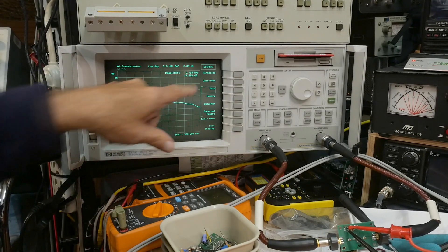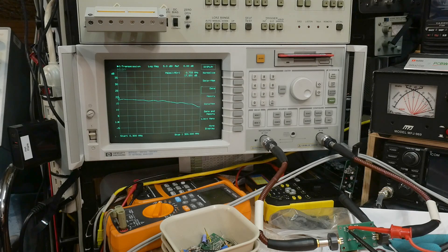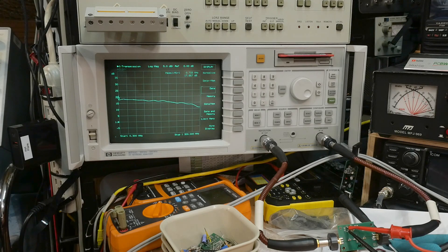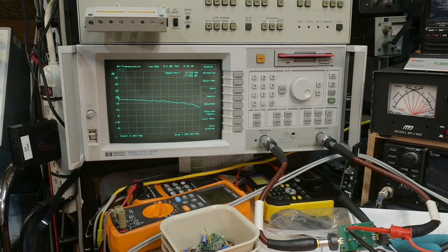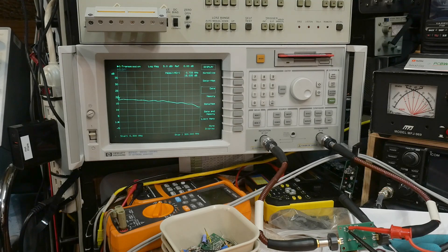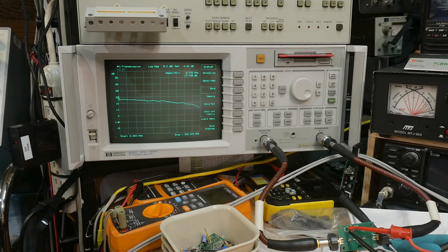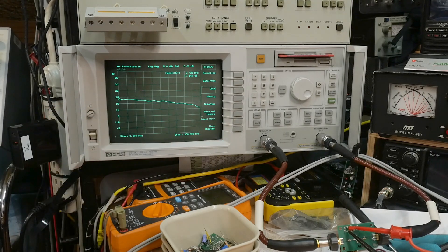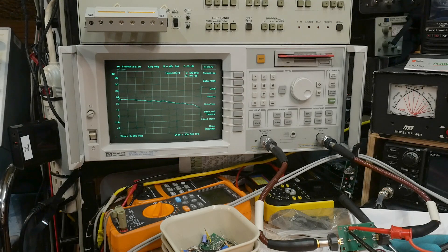We're getting 17.7 dB of gain. I think that's exactly datasheet. MAR-1 datasheet is 17.8 dB, and we're right on datasheet, and these things are good to one gigahertz.